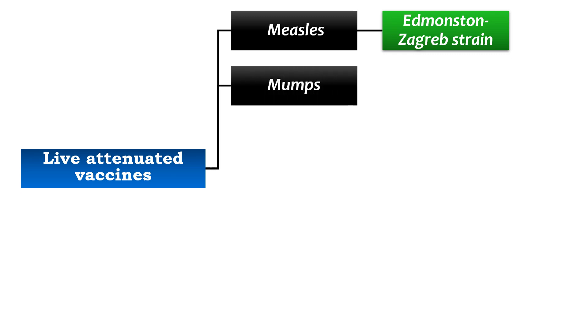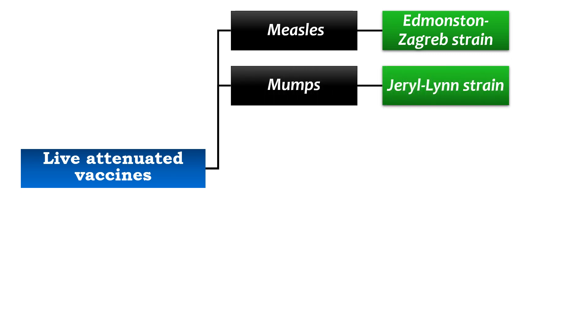For mumps, the strain used is the Jeryl Lynn strain. This is also a live attenuated vaccine prepared from chick embryo cell lines. It is available in trivalent, quadrivalent, and monovalent forms.